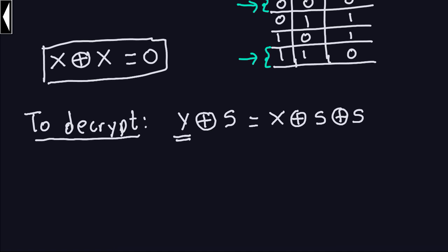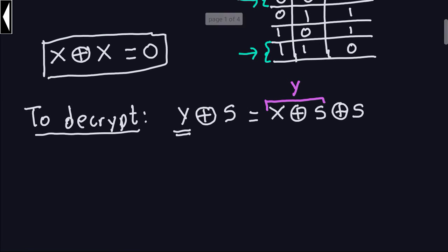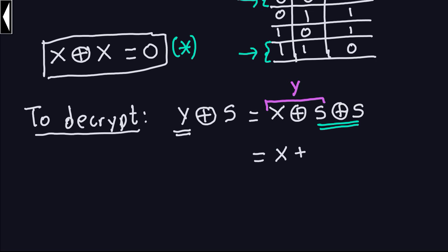This Y here represents the process of decryption. You take the ciphertext and you XOR it with the string S. Now, if you look at what we have there — using another color — this part here is S XOR S. And by this property, marked with an asterisk, that will be zero. So then what happens is this is going to be equal to X XOR 0. So X XOR 0, because S XOR S is zero.